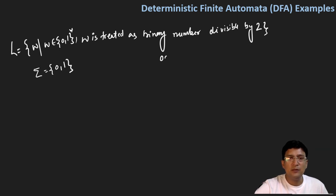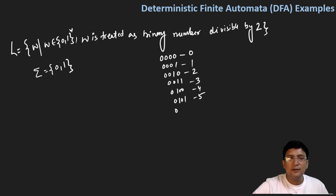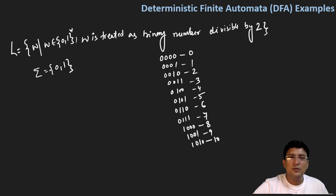Let's make a sequence of binary numbers: 0000 has equivalent zero, 0001 is one, 0010 is two, 0011 is three, 0100 is four, 0101 is five, 0110 is six, 0111 is seven, 1000 is eight, 1001 is nine, 1010 is ten, and so on and so forth.